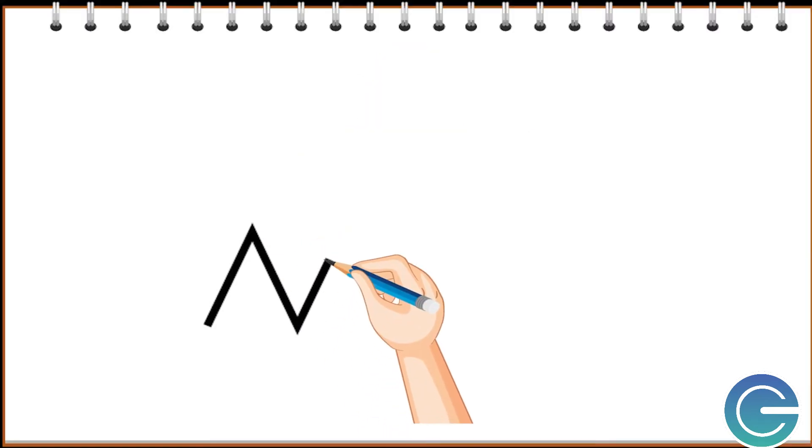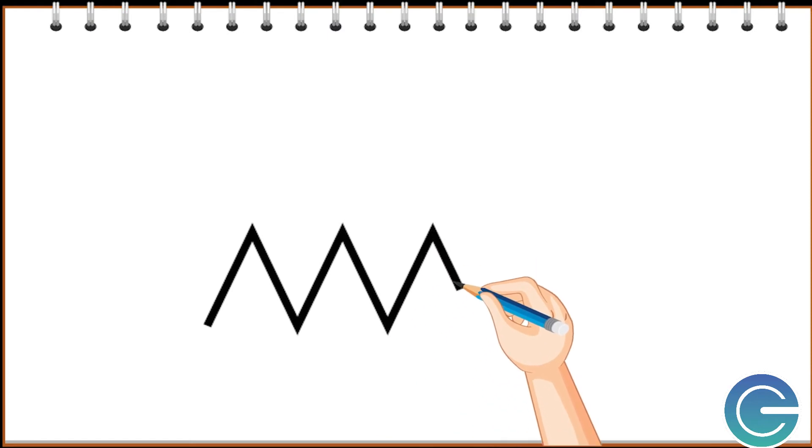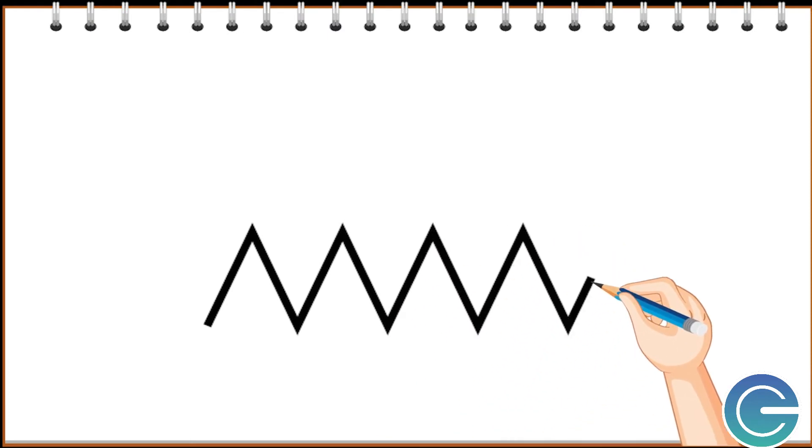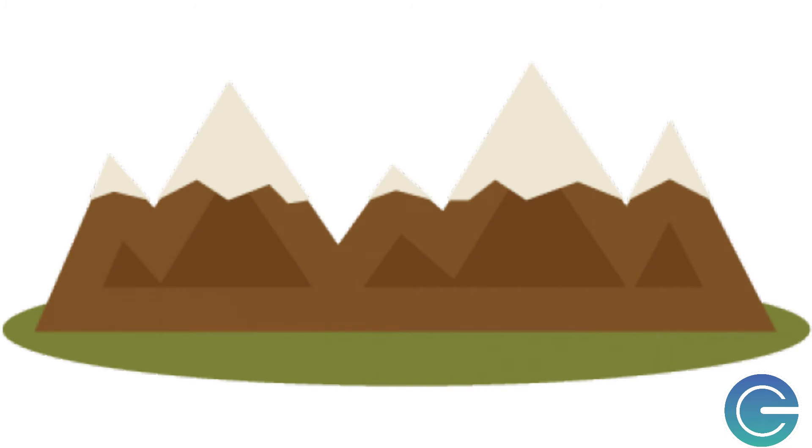Straight lines can also look like this. This is called the zigzag line. It looks like a mountain range.